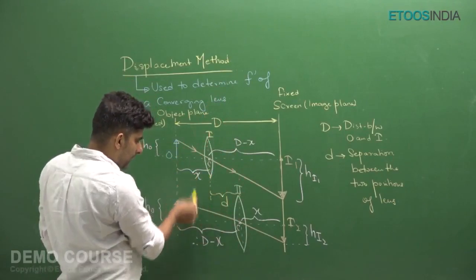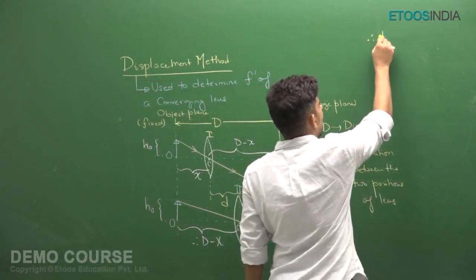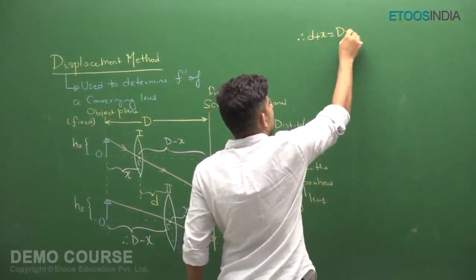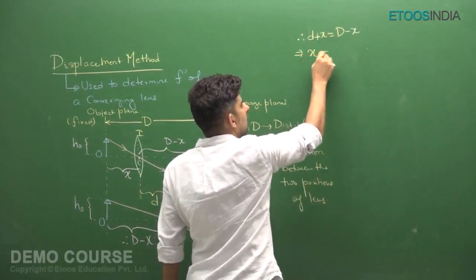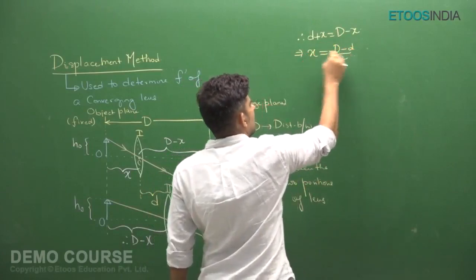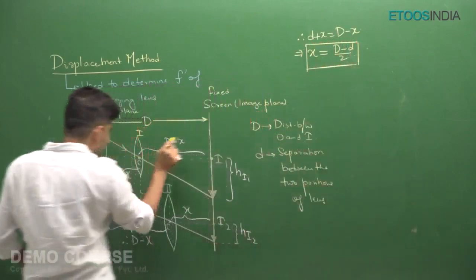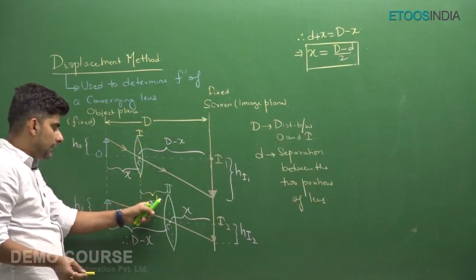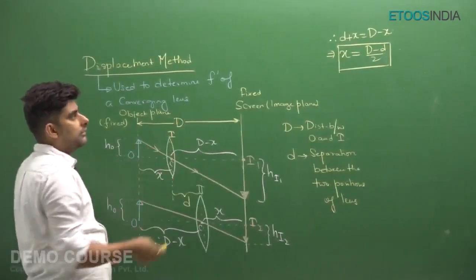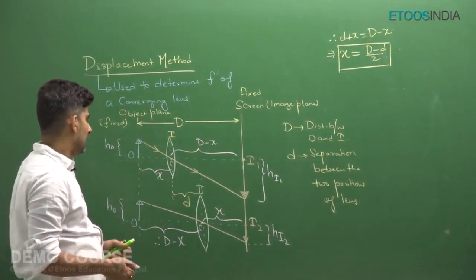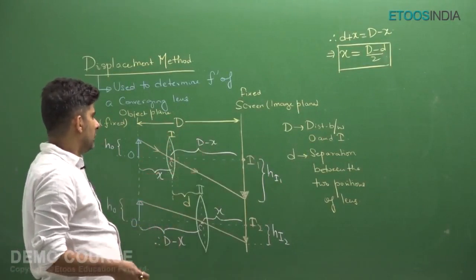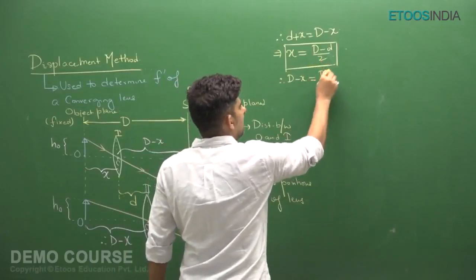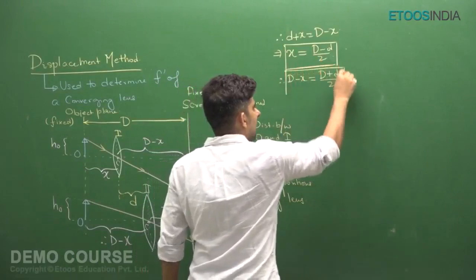From the diagram, small d plus x is equal to capital D minus x, which gives us the object position x equals (D minus d) divided by 2. Therefore, D minus x can be written as (D plus d) divided by 2. So if you want to achieve these two lens positions for a given separation capital D and lens separation small d, the object should be placed at distance x equals (D minus d) over 2.